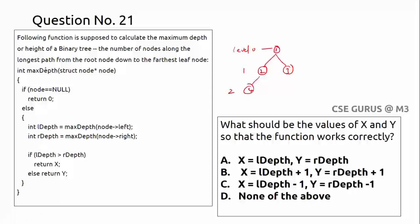The code has a function maxDepth with a node parameter. If node equals null, it returns zero (empty tree). Otherwise, it recursively calls maxDepth on the left and right subtrees, returning whichever depth is greater. The question asks: what must be written in place of x and y — is it lDepth and rDepth, or lDepth+1 and rDepth+1, or some other combination?